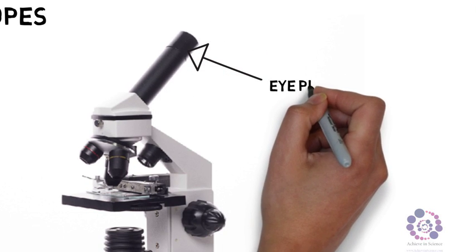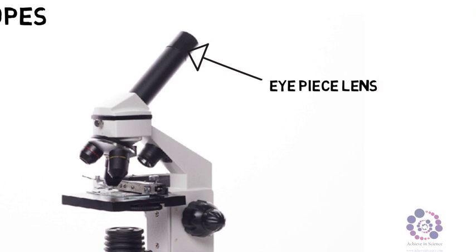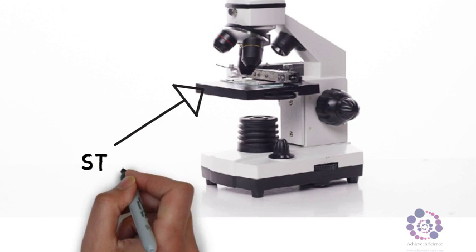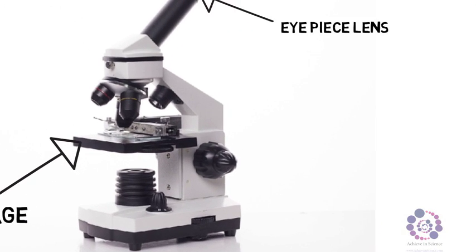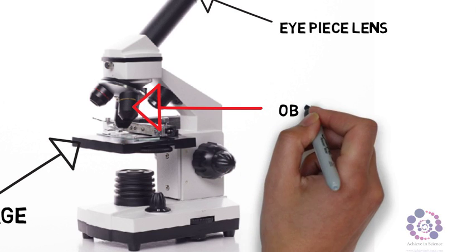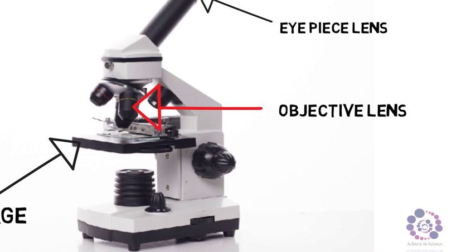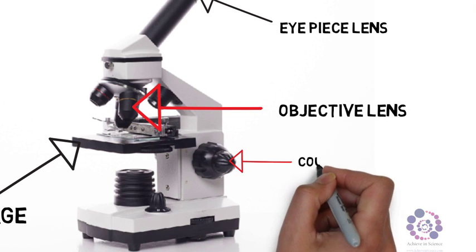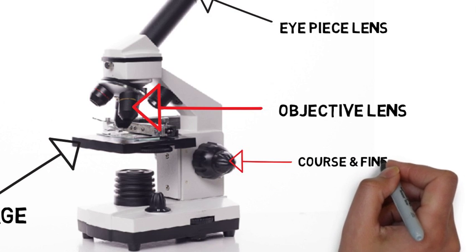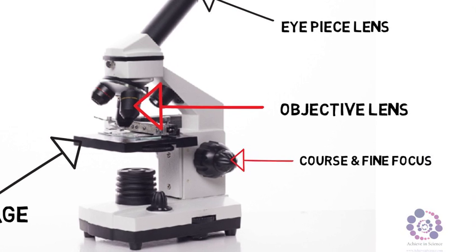First of all, they have an eyepiece which consists of a lens. They have a stage where you put the specimen. They have an optical lens, usually three. They have coarse and fine focus dials. They have a light source.